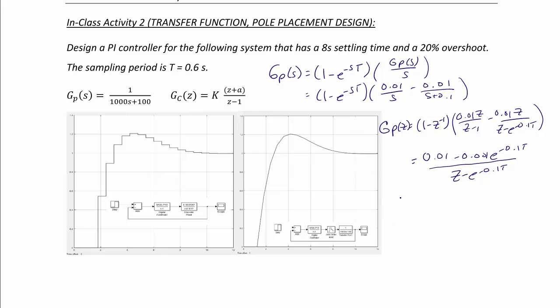Once we substitute in t equal to 0.6 seconds, our discrete time plant is 582 micro over z minus 0.942. Our closed-loop transfer function is gc GP over 1 plus gc GP or that can also be written as nc NP over dc DP plus nc NP.